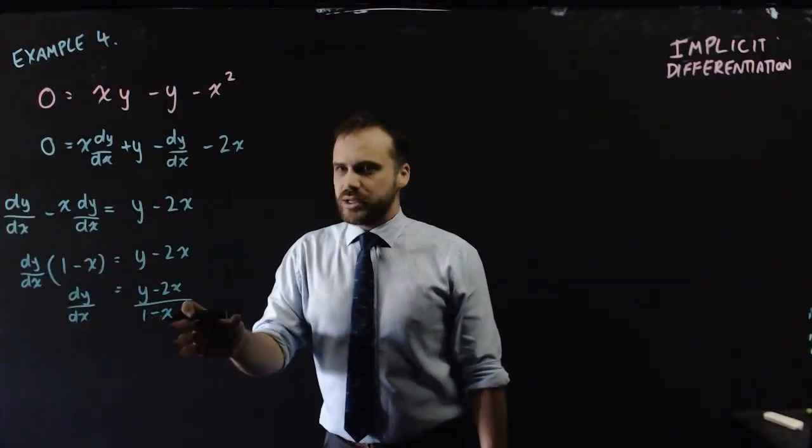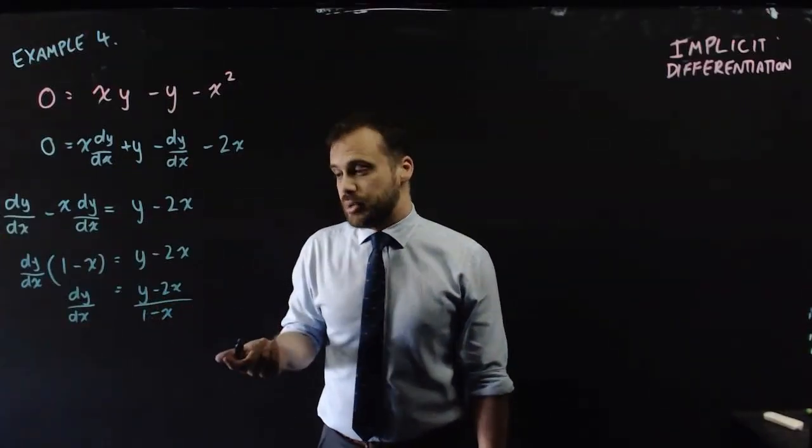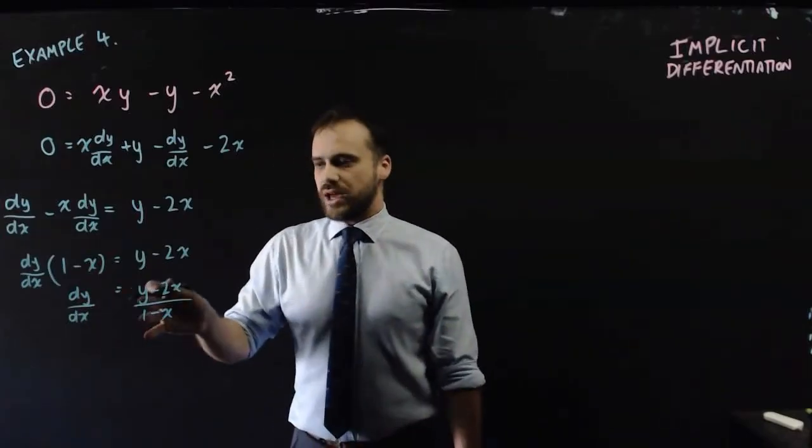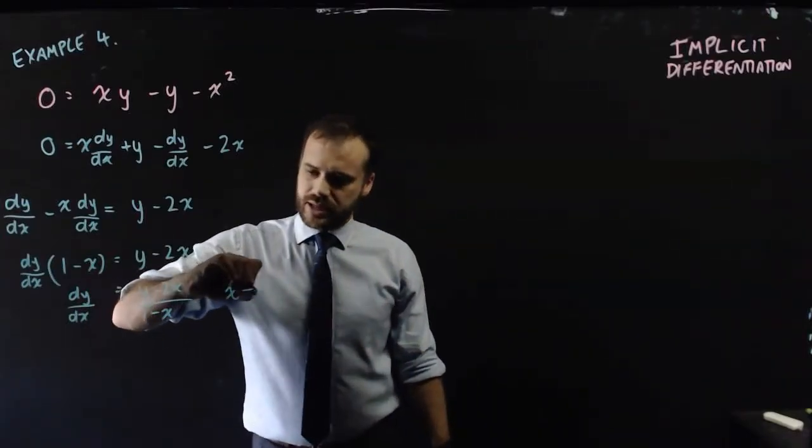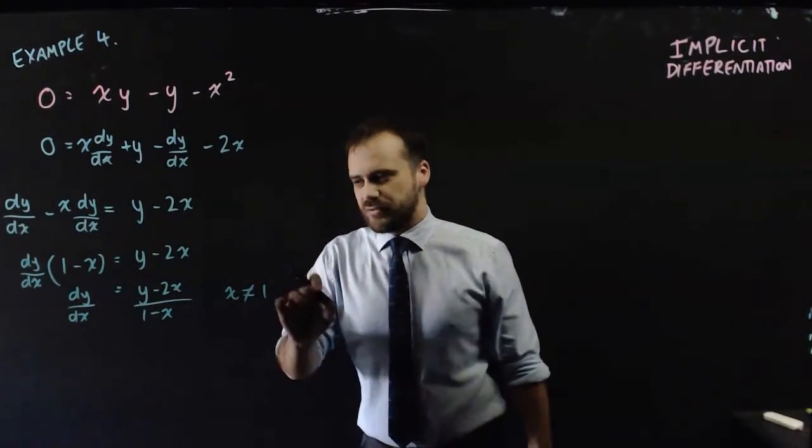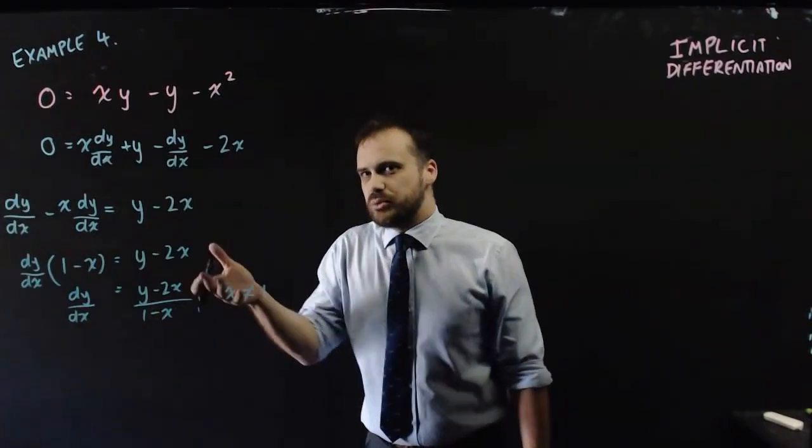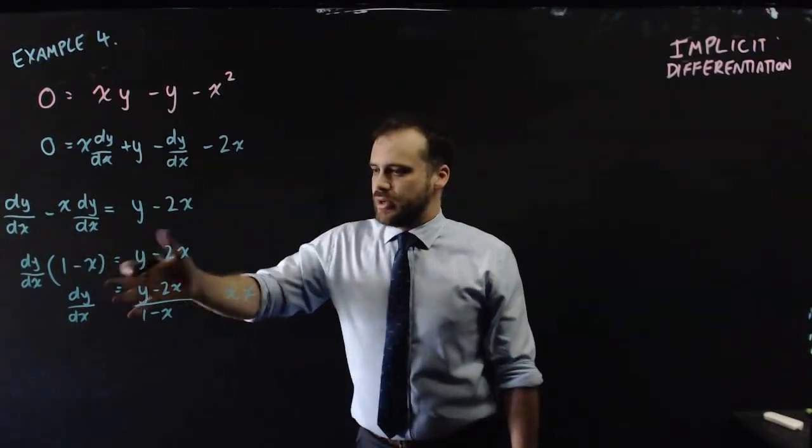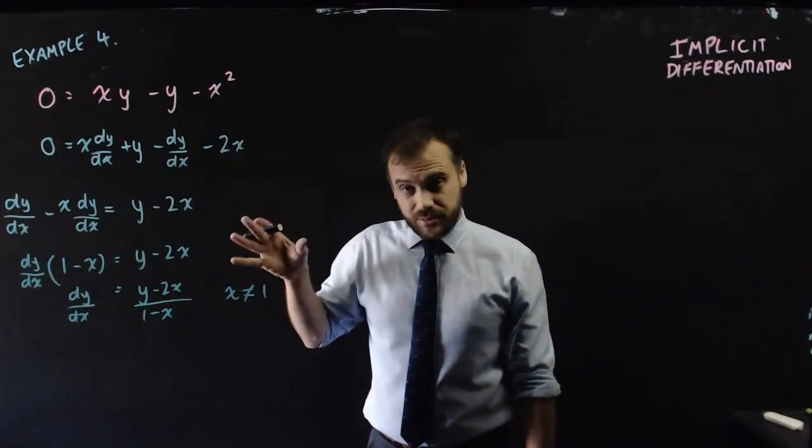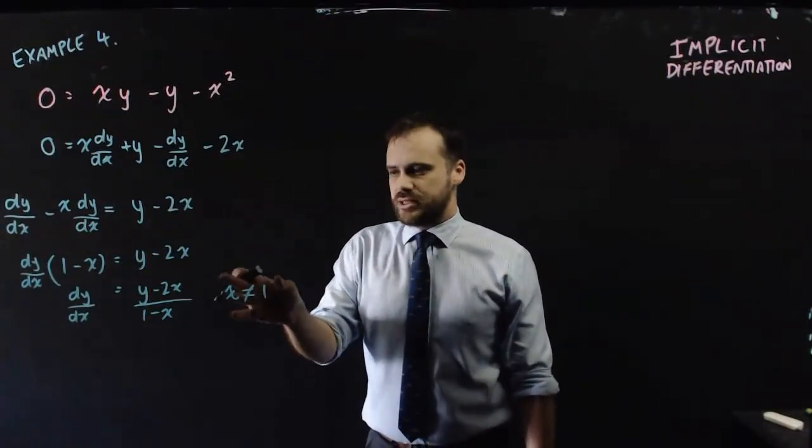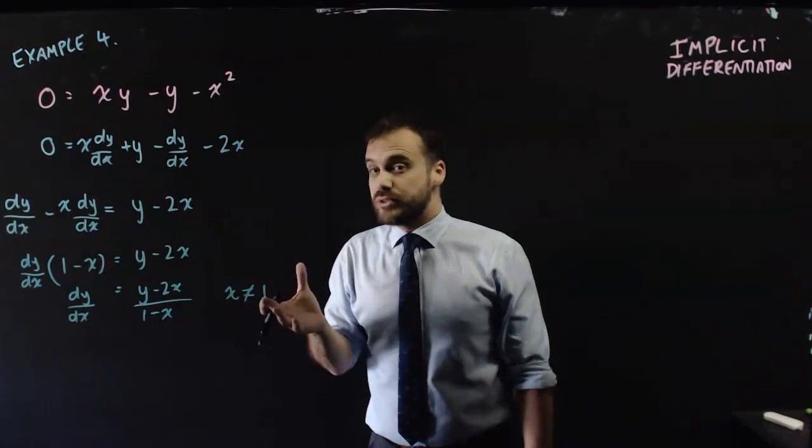1 minus x, what can't x be? This is the derivative as long as x is not equal to 1. Because if x was equal to 1, the denominator would be 0 and it doesn't make any sense. So, in those other three examples I've done,